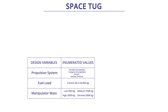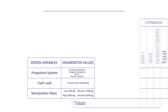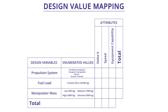The third design variable was amount of fuel on board, specified at eight different levels to cover a large range of possible masses. The amount of fuel was chosen to drive delta-V and response time. Supporting the development of design variables, we developed an approach called design value mapping, which is a matrix-based approach to ensure that design variables actually drive the attributes.